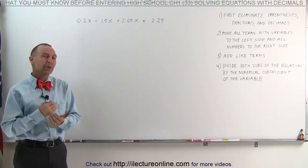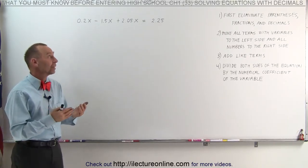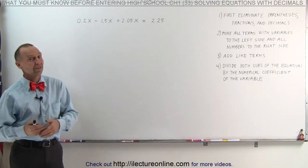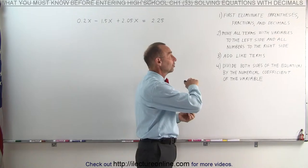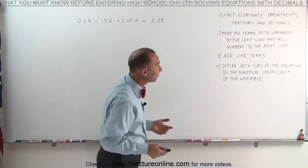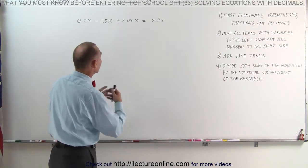Welcome to ElectronLine. Here we have an example where we have an equation that contains decimals. Step number one is always first eliminate parentheses, fractions, and/or decimals. In this case, there's decimals when you get rid of the decimals.